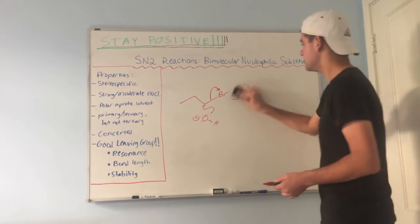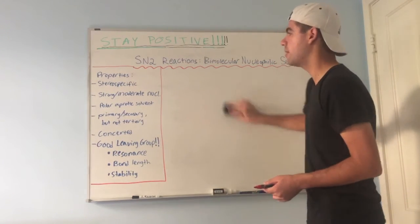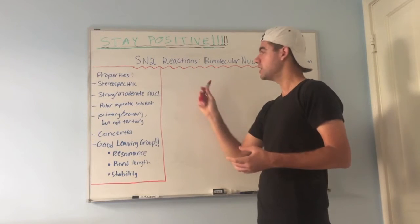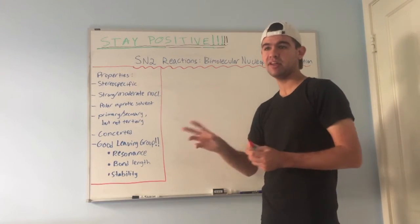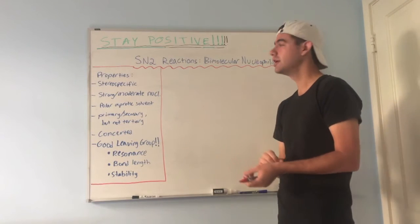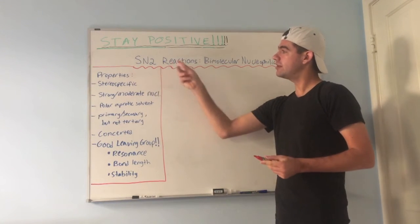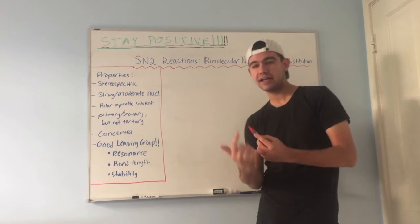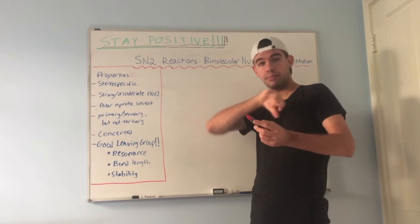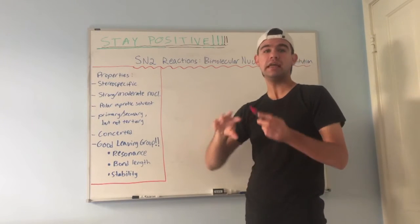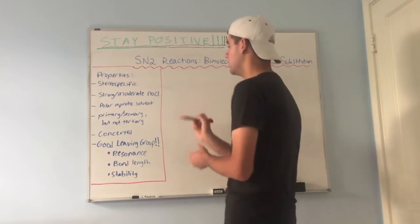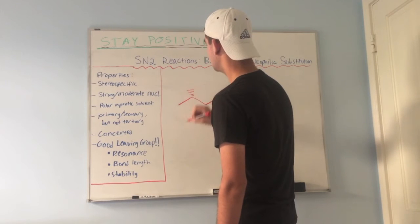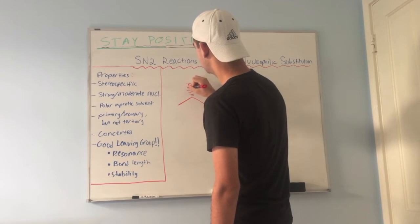It's a pretty simple reaction mechanism. Let me go over some properties. First, SN2 reactions are stereospecific. Stereochemistry is about the three-dimensional structure of molecules. When we say SN2 is stereospecific, we mean that upon attack, when the nucleophile like OH⁻ attacks the electrophilic carbon, it attacks from the back — this is called backside attack — and that inverts the stereochemistry of the original molecule.